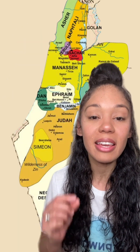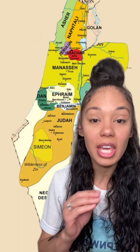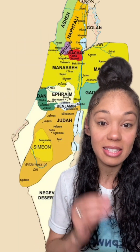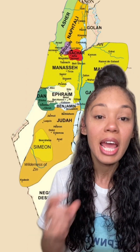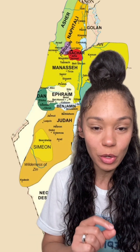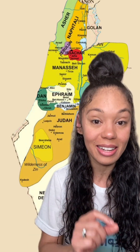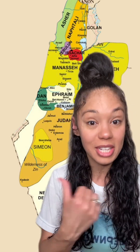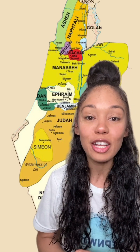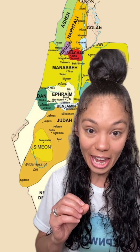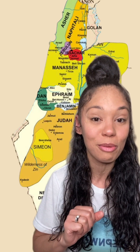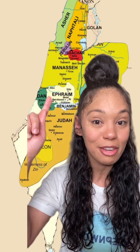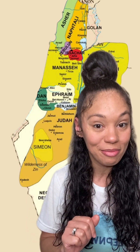Chapter 14 gets into the allotment — that is the inheritance — on the west side of the Jordan, and the first one who wants to lay claim to it is none other than Caleb, Joshua's sidekick. As you know, Caleb is from the tribe of Judah but Joshua is from the tribe of Ephraim. Let that sink in.